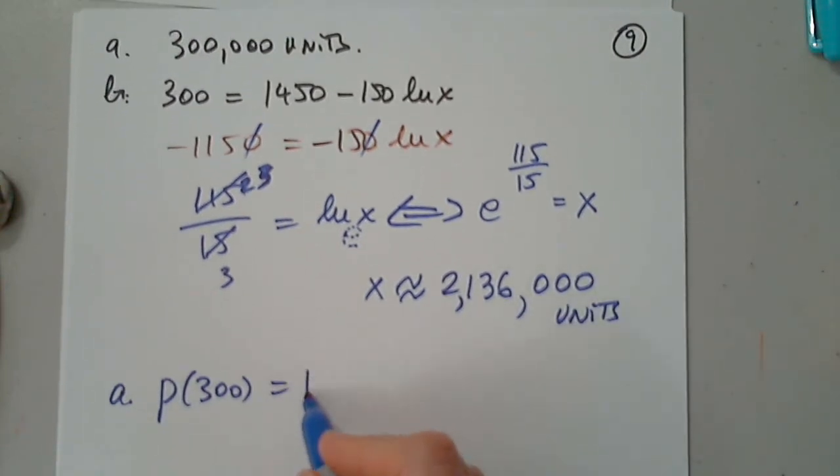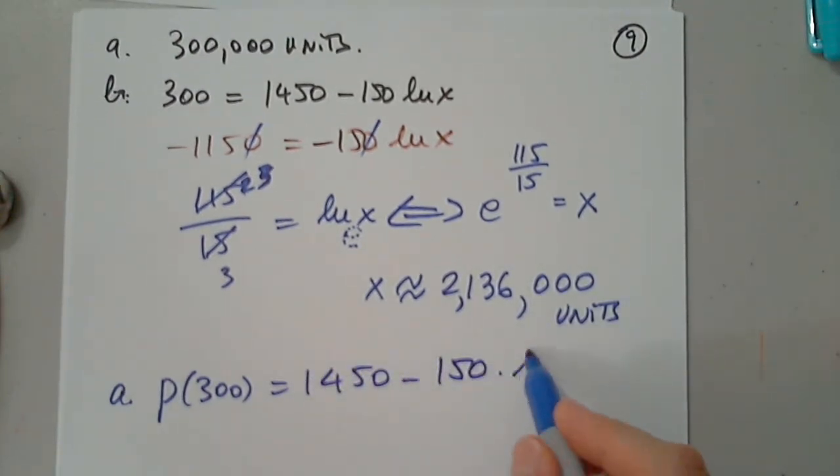Okay. So I have that. So this is 1, 4, 5, 0 minus 150 times natural log of 300. No one can do this by hand. So I'm going to plug it in. And what do I get? Let's see. 1, 4, 5, 0 minus 150. And natural log is right here. And 300. So let's see the demand. Okay. For the demand of 300,000, the price should be $594.43 per unit. And that's it.